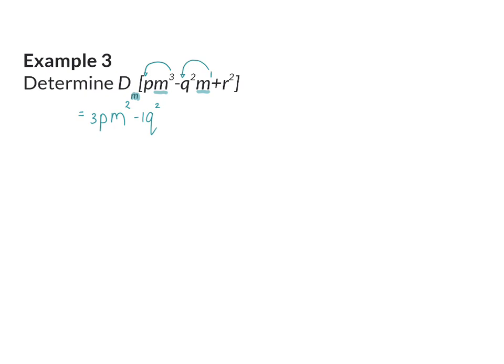And if we have a look at our third term, you will see that there is no m value, which means this is a constant, and the derivative of a constant is 0, which we don't have to write. So our final answer is 3 p m squared minus q squared.